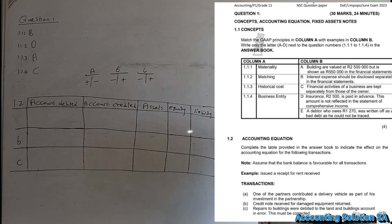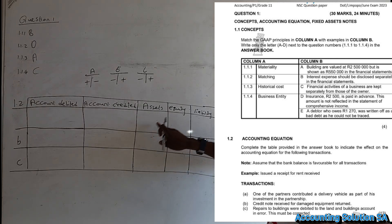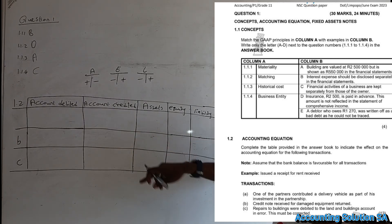Moving on to Section 1.2 — the accounting equation. Complete the table provided in the answer book and indicate the accounting equation effect of the following transactions. Assume that the bank balance is favorable for all transactions. They are not going to give us amounts, but they want us to indicate whether it is a plus or minus.